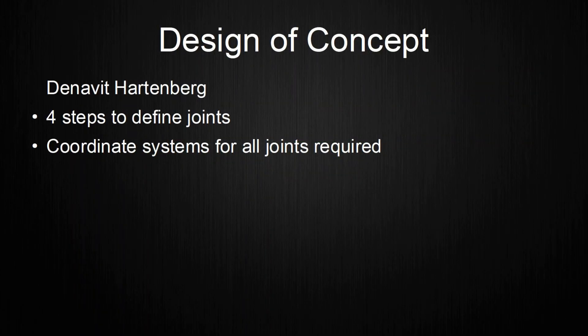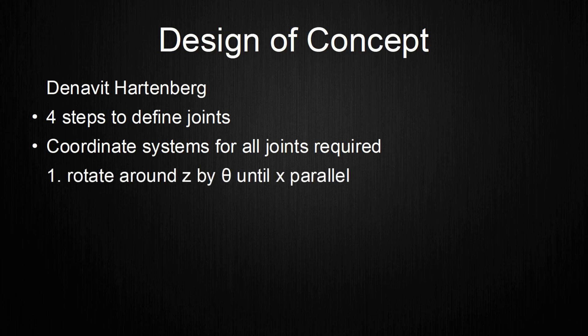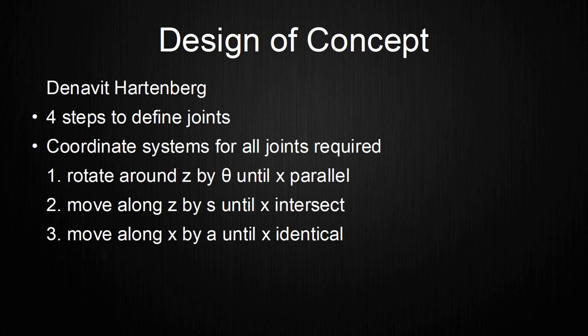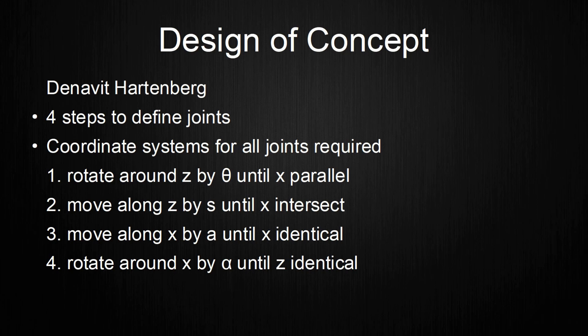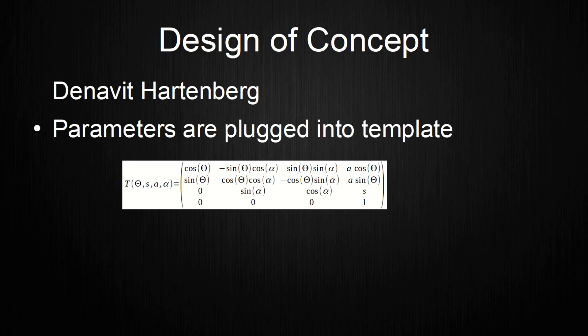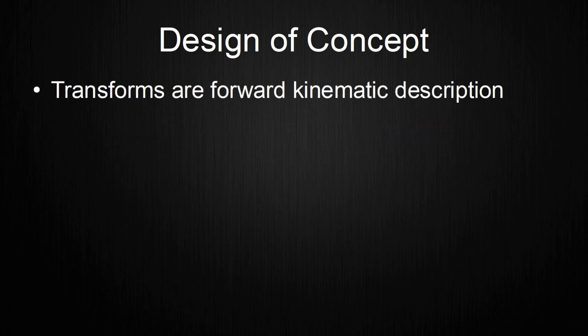Next, the DH parameters need to be defined for all coordinate systems. These will be used to create the transforms. The steps to get the DH parameters are the following. First, rotate around z by theta until both x-axes are parallel. Second, move along z by s until both x-axes intersect. Third, move along x by a until both x-axes are identical. And lastly, rotate around x by alpha until both z-axes are identical. The DH parameters are then plugged into this template transform. The results are the final transforms for all joints. These transforms are the forward kinematic description of the robot.